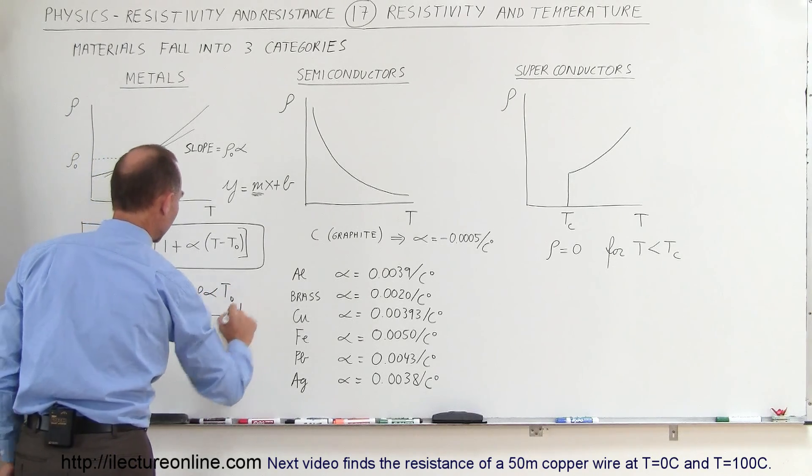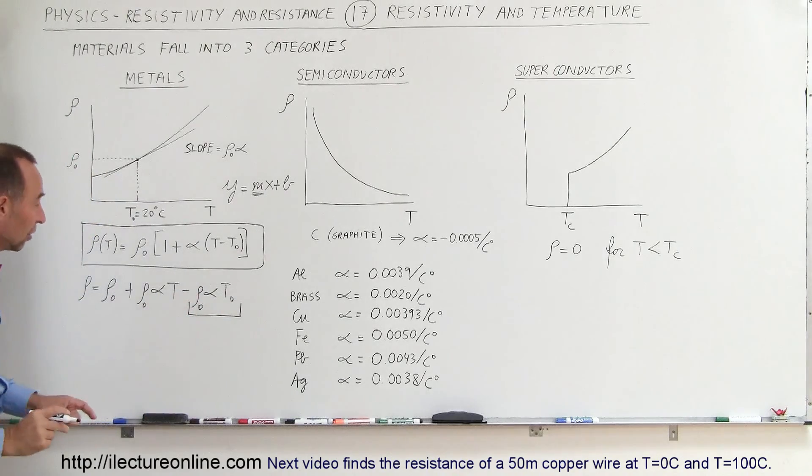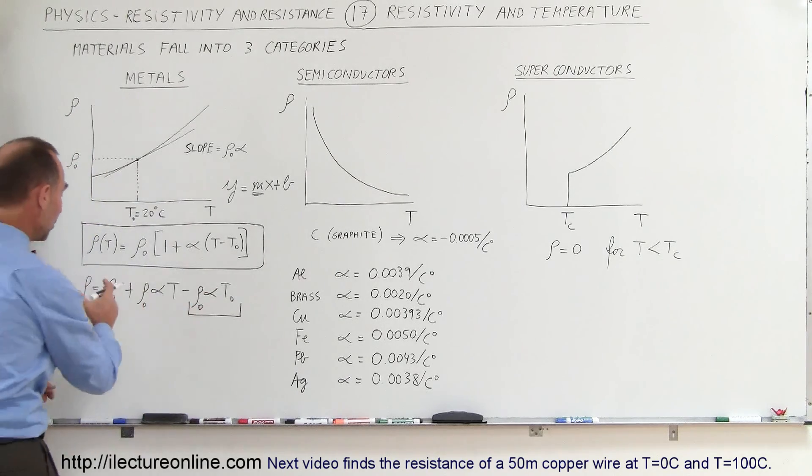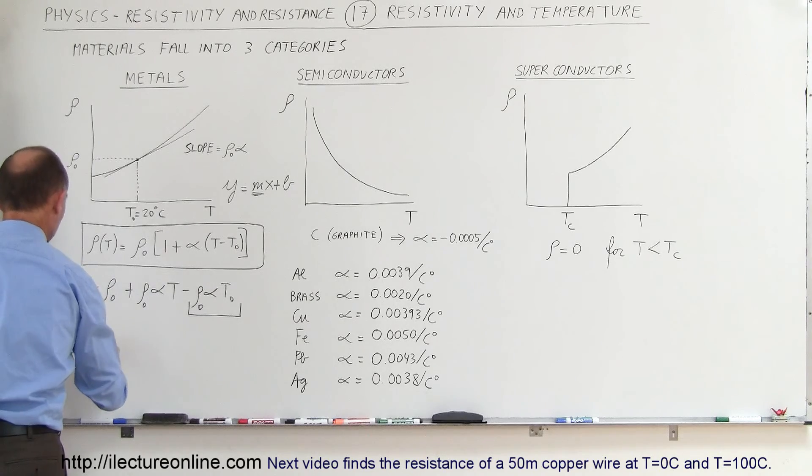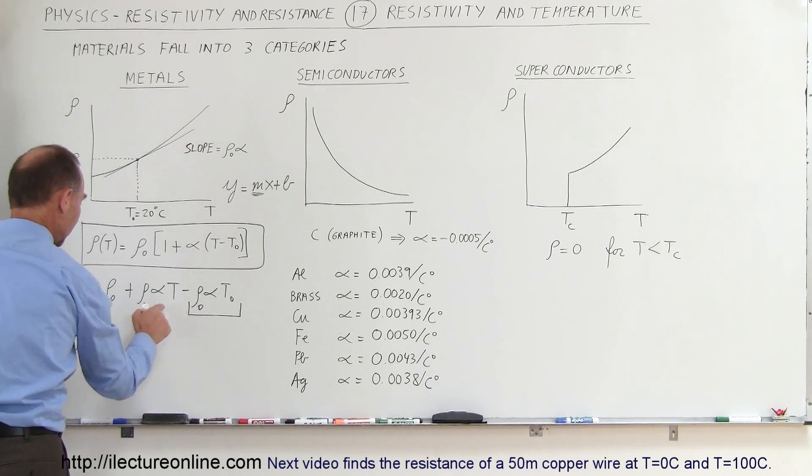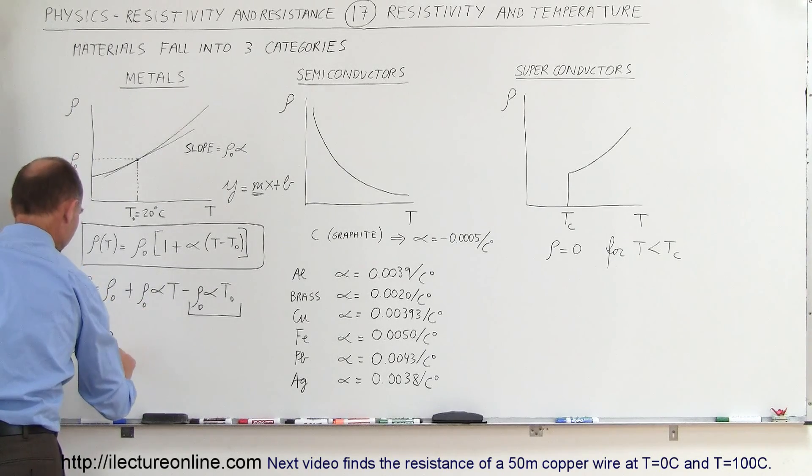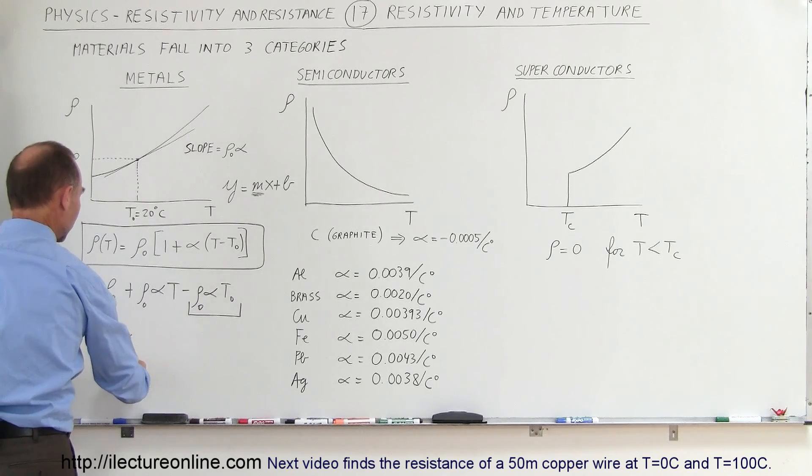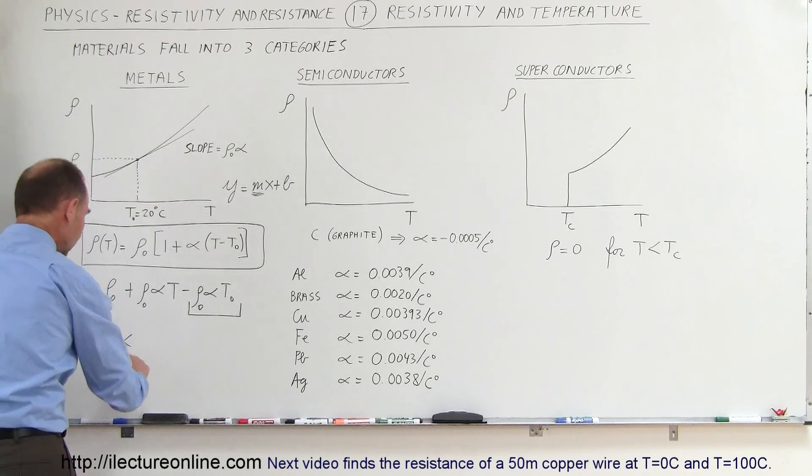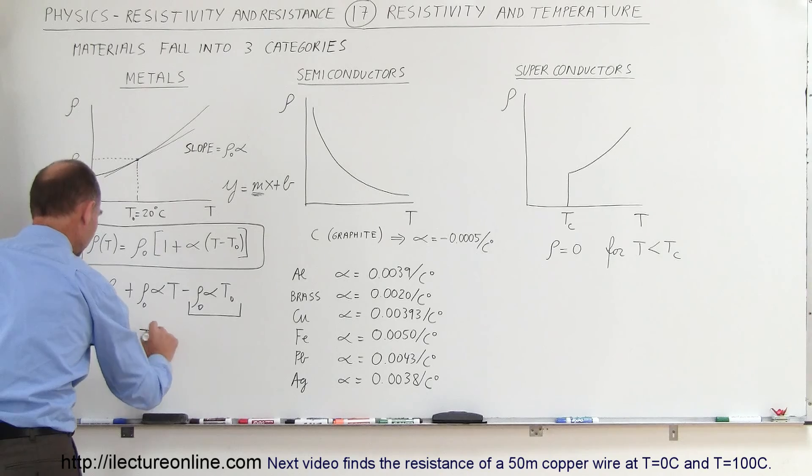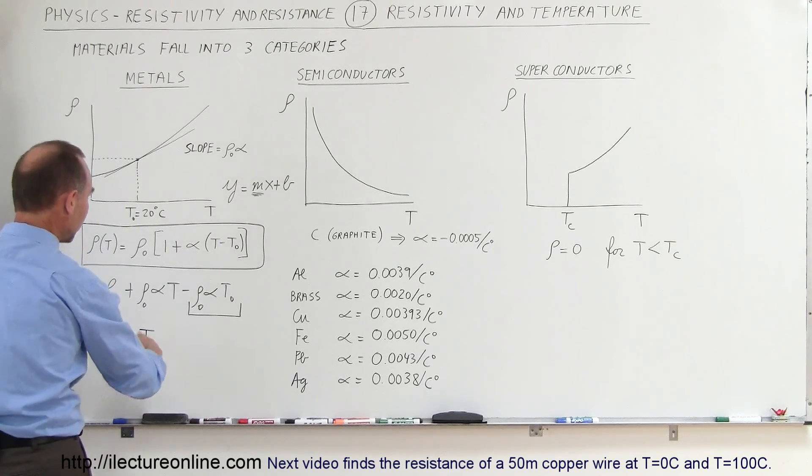This here is a constant because there's no variation at all. We can move that over, so we have the resistivity equals, I'm going to write this term first, resistivity times the temperature coefficient times the temperature, which is the variable on the right side equation.